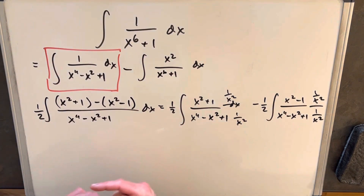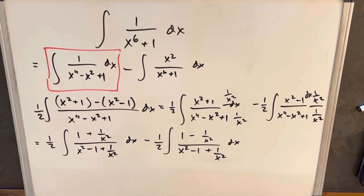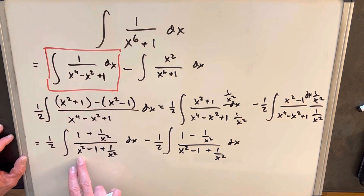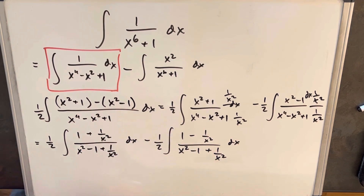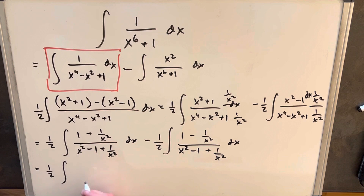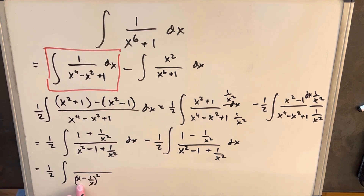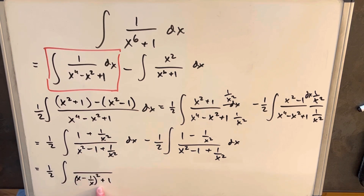When I distribute in the 1 over x squared, we get the same denominator in both cases: x squared minus 1 plus 1 over x squared. The only difference is the numerator sign — positive in the first and minus in the second. Now I need to factor these denominators helpfully. For the first one, I write the denominator as (x minus 1/x) squared. Squaring that gives x squared plus 1 over x squared, and the middle terms give minus 2. Since we have minus 1 there, I add plus 1 and adjust.